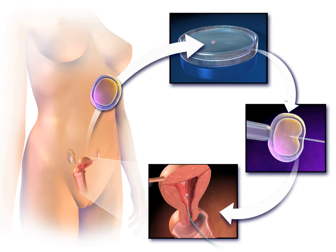In vitro fertilization is the technique of letting fertilization of the male and female gametes occur outside the female body. Techniques usually used in IVF include transvaginal ovum retrieval — the process whereby a small needle is inserted through the back of the vagina and guided via ultrasound into the ovarian follicles to collect the fluid that contains the eggs.